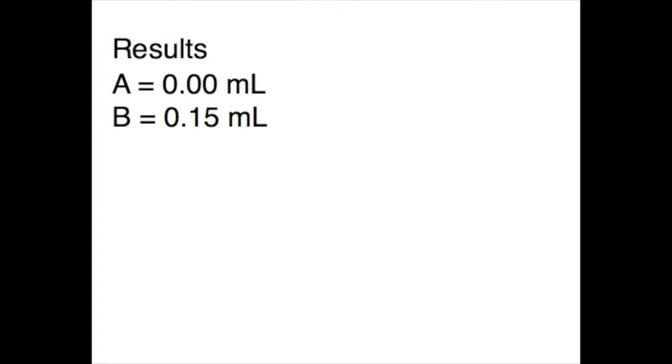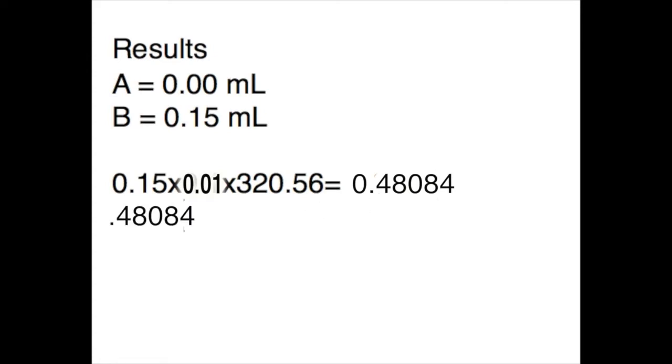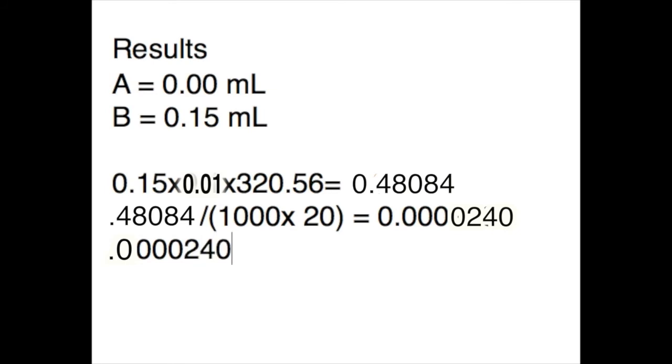To figure out the amount of soap in your biodiesel, subtract A from the B value, and then multiply that by 0.01, which represents the normality of the hydrochloric acid solution. Then multiply that by the conversion factor. In our case, it was potassium hydroxide, KOH, which is 320.56. Then we divide that by the number of milligrams of sample ester used, which is 20 grams multiplied by 1,000. So we divide the total on top by 20,000. This gives us a very small number. To get the final result in parts per million, we need to multiply that by 1,000,000, and we get a final result of 24 parts per million soap.